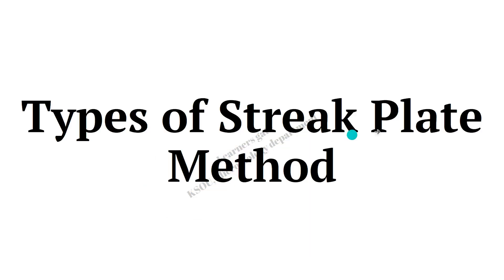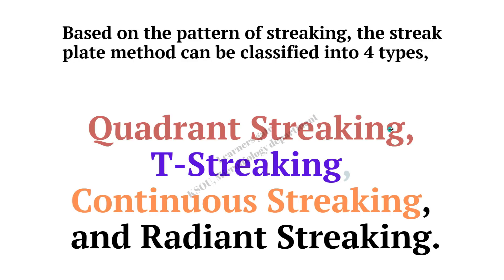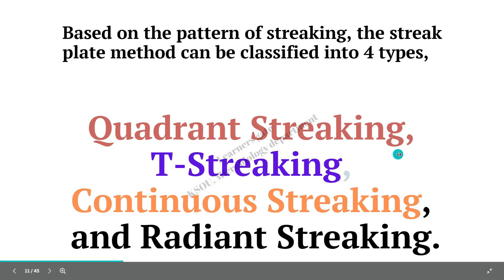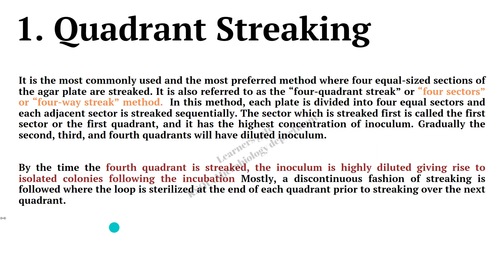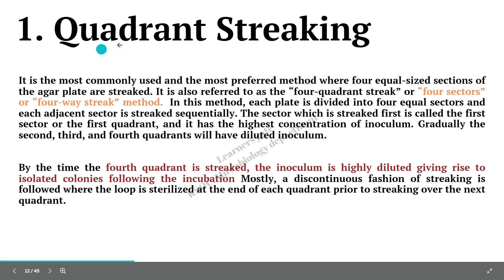There are different types of streaking techniques. Based on the streaking types we have categorized four different types: quadrant streaking, which is one of the most popular streaking techniques used in research; T-streaking; continuous streaking; and radiant streaking. The students who have attended our practical classes at KSU might have physically experienced these types of streaking techniques.